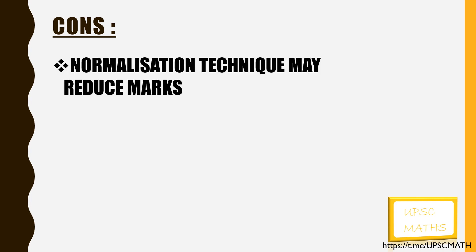Maths being a highly scoring subject, UPSC uses a normalization method. They have their own formula to calculate the marks, which depends on many factors. But if you score more than 400, the effect of normalization will be less on your overall marks.